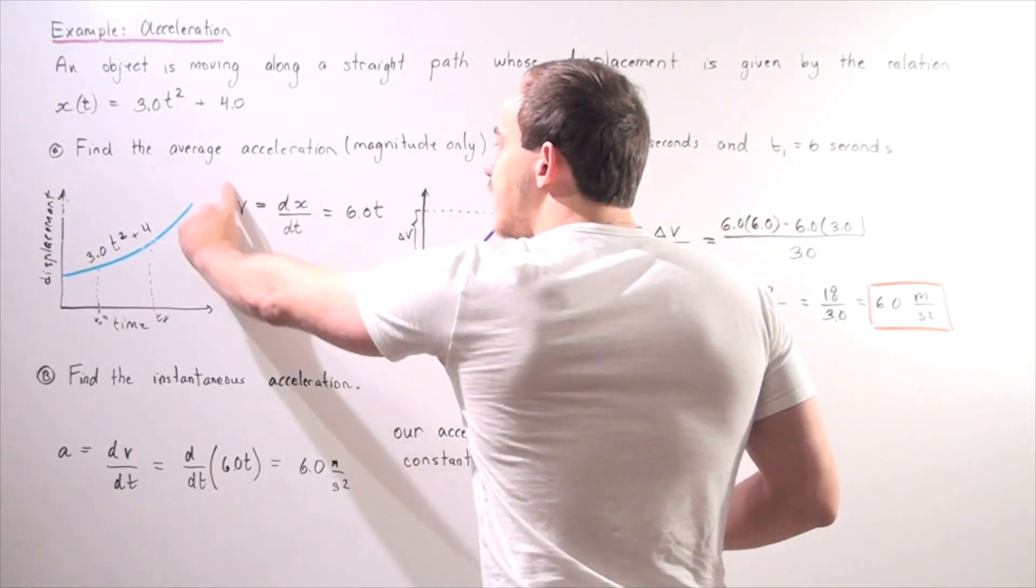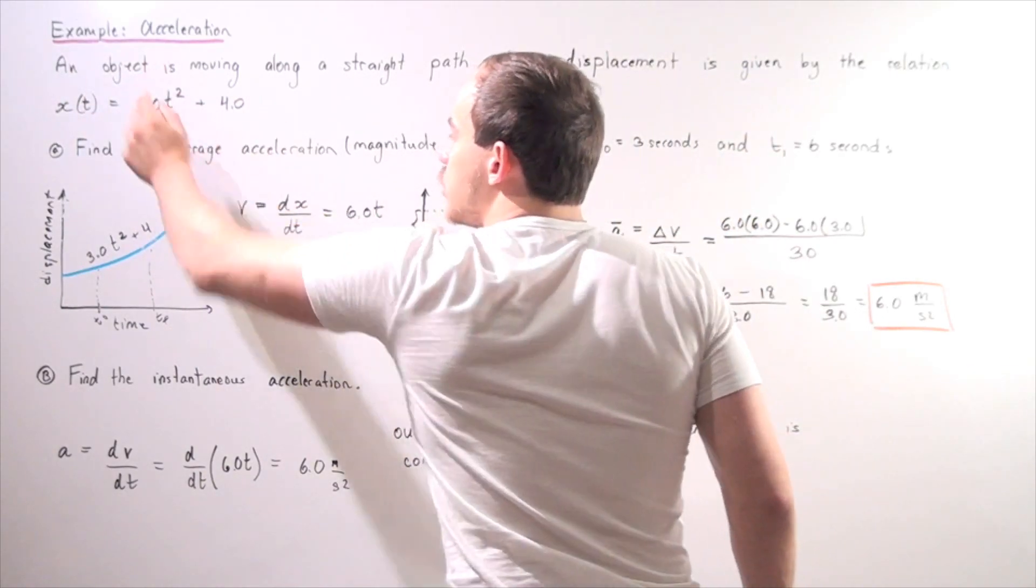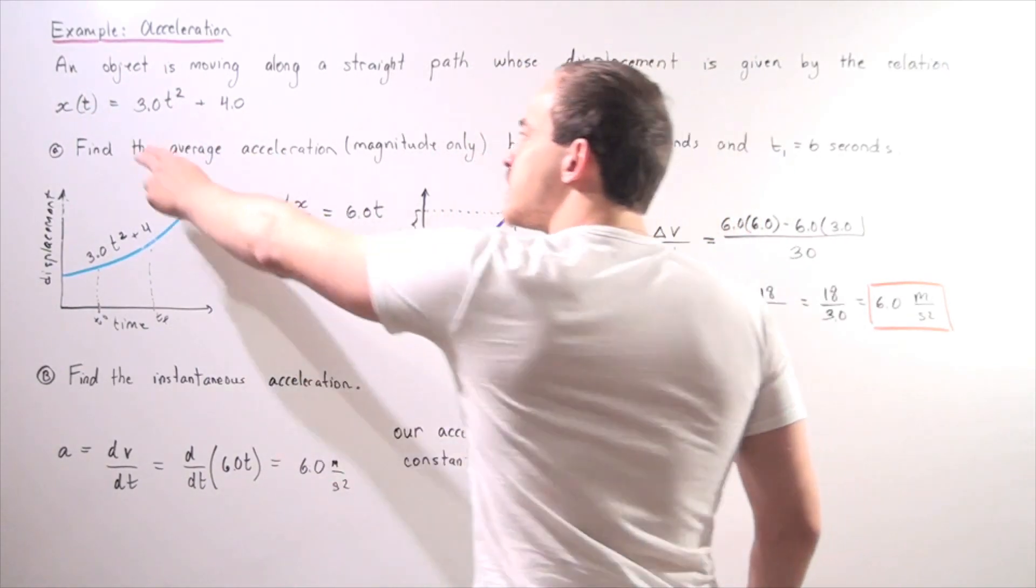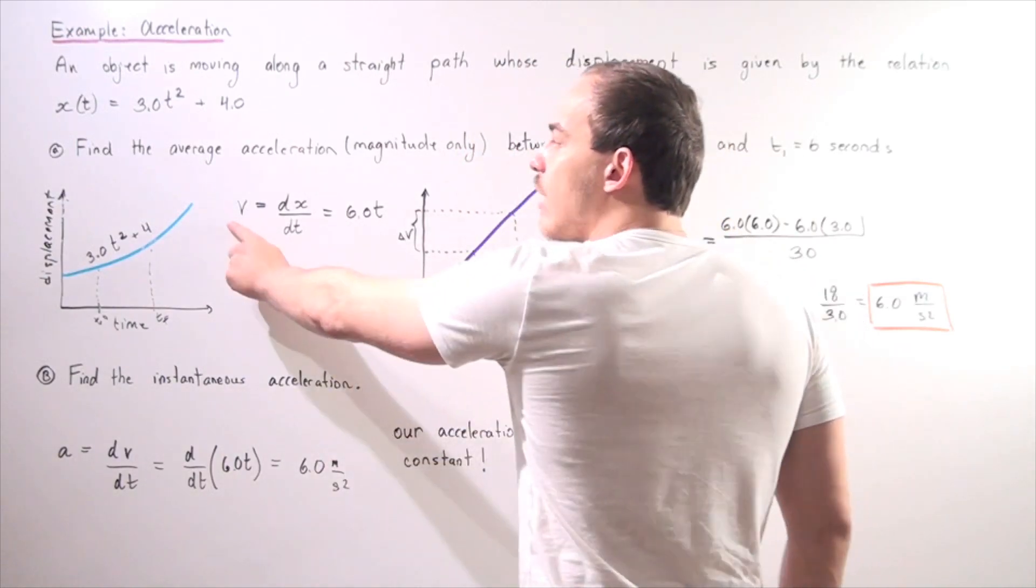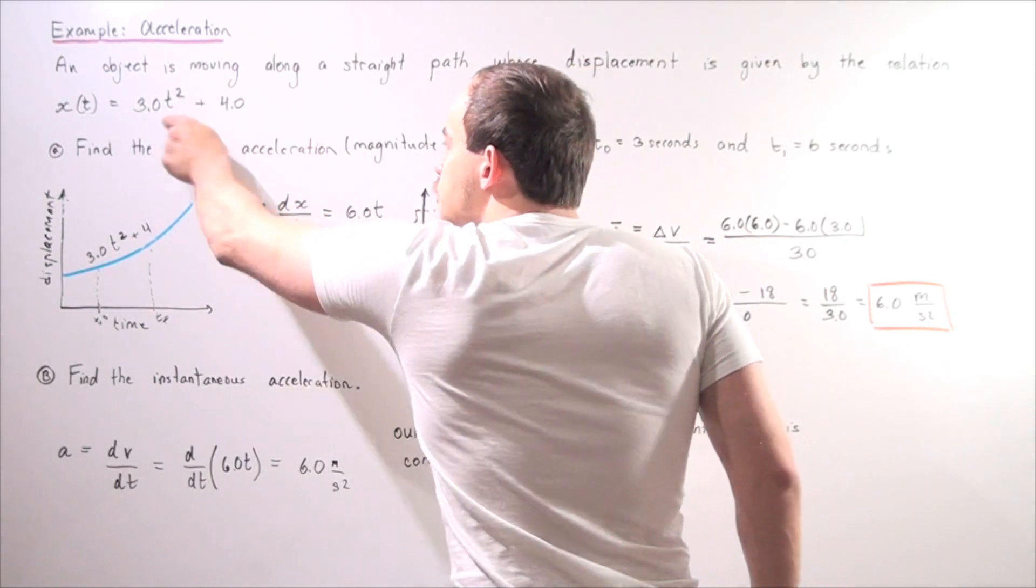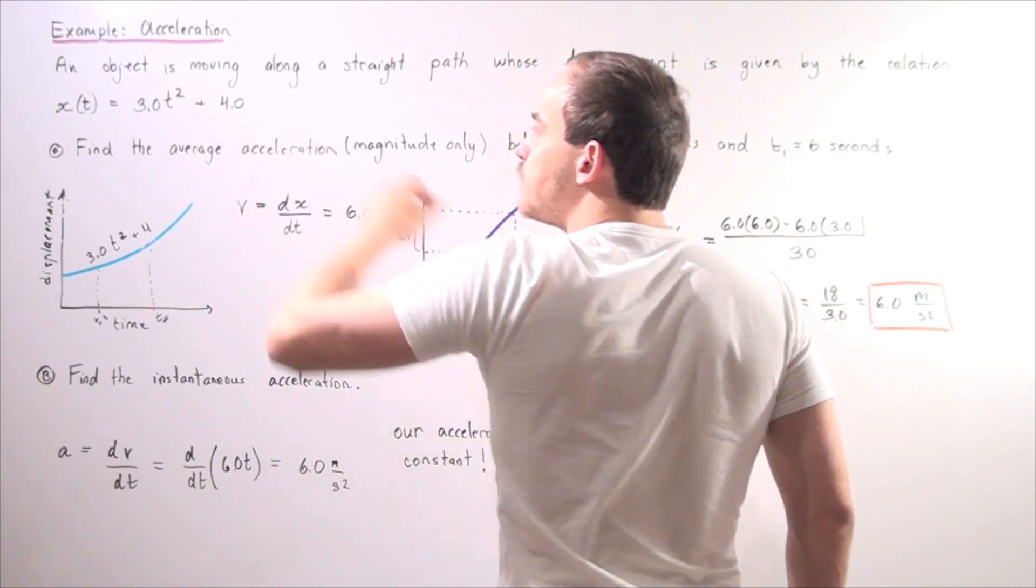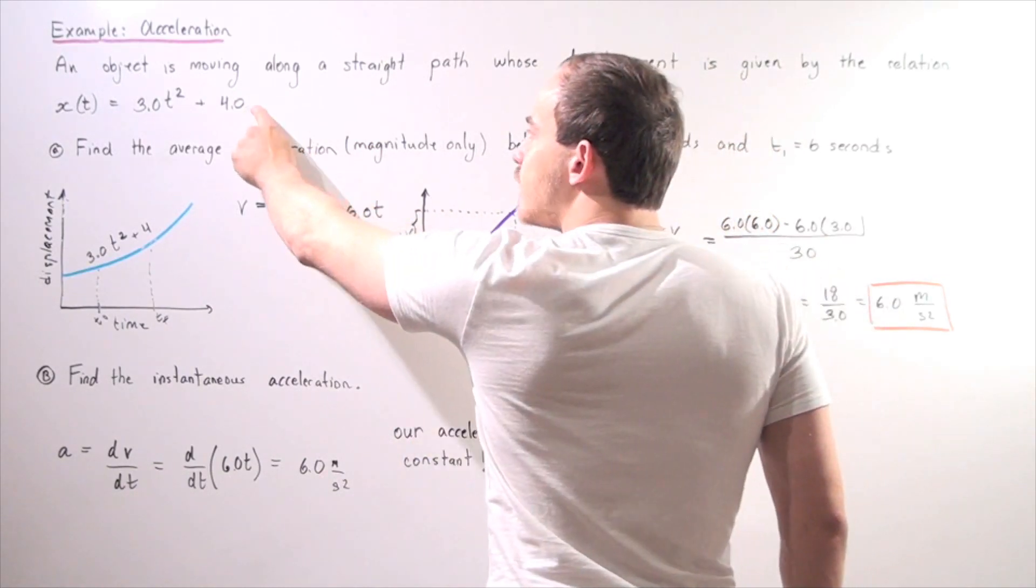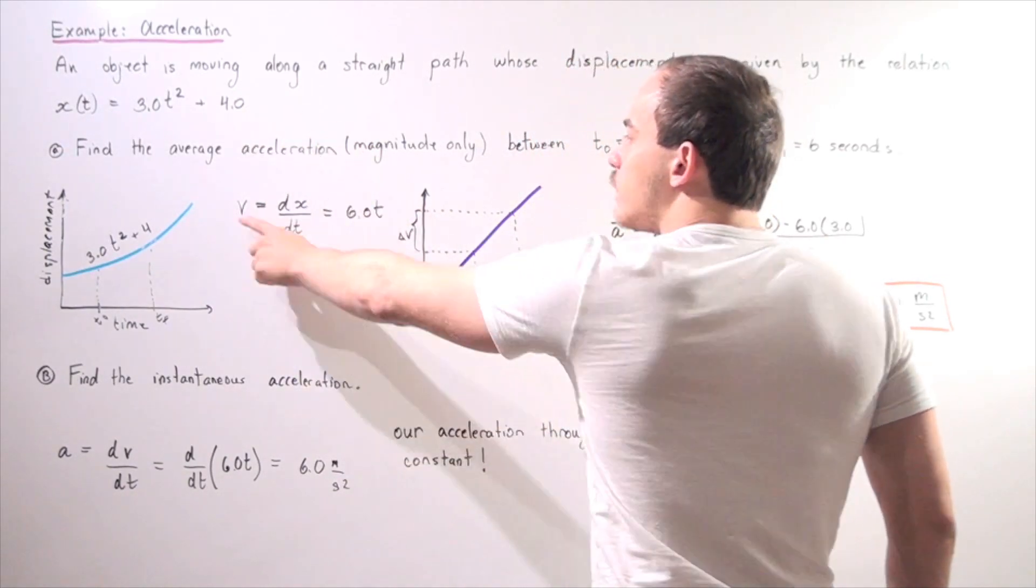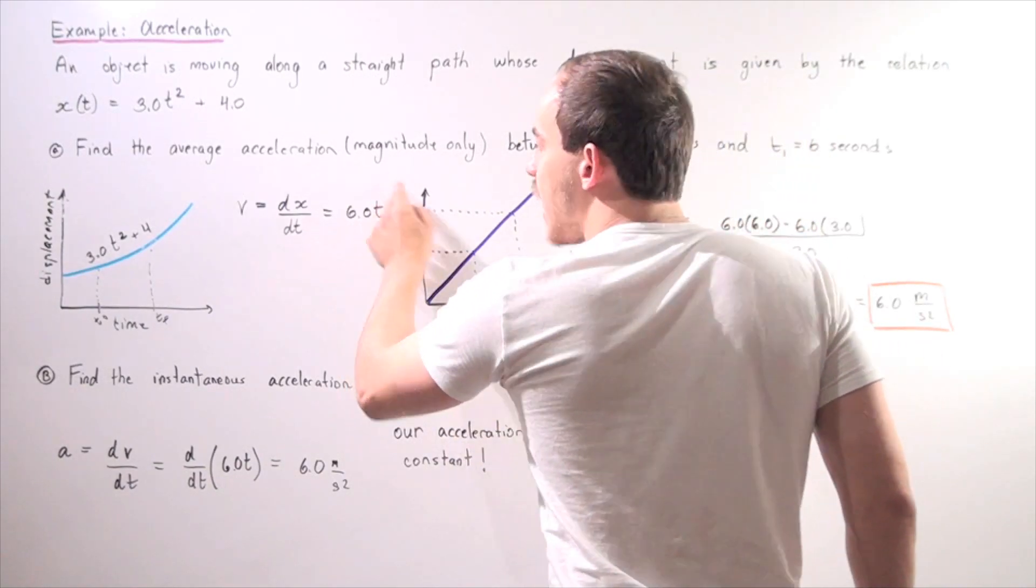So let's take our function and take the derivative of this displacement function to give us our velocity. So the first derivative of this function, this term becomes 2 × 3 × t. The second term becomes zero because we don't have a t term here. So our velocity with respect to time is simply v(t) = 6.0t.